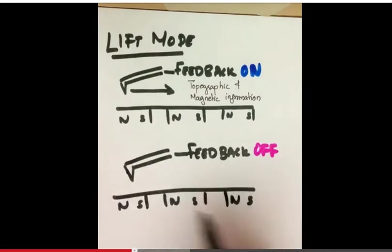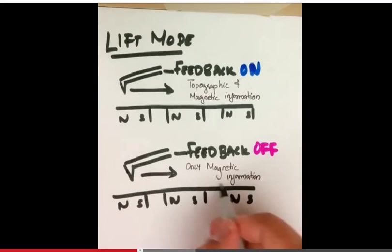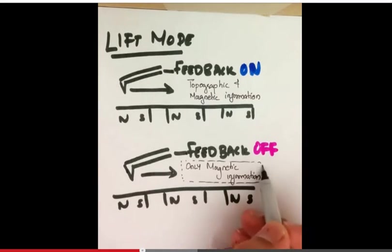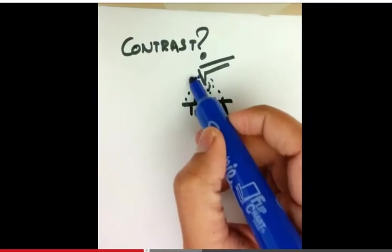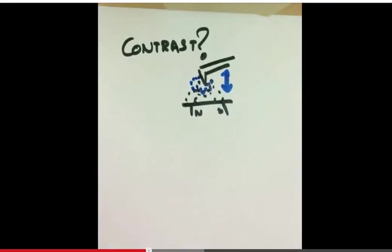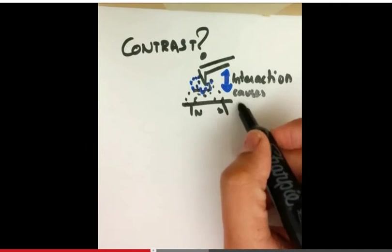The cantilever then retraces the topological information that it obtained in the first run to obtain all the magnetic information of the surface. So where does the contrast in the images come from? The interaction between the magnetic tip and the stray magnetic field leads to contrast formation.